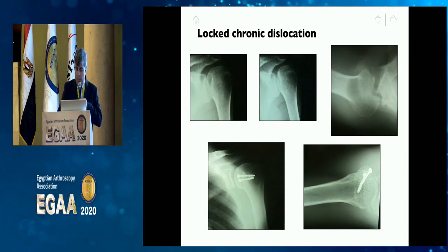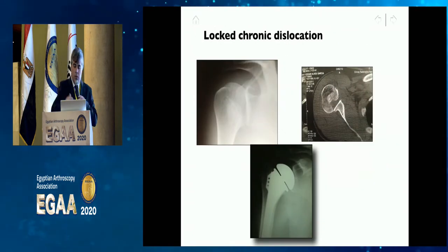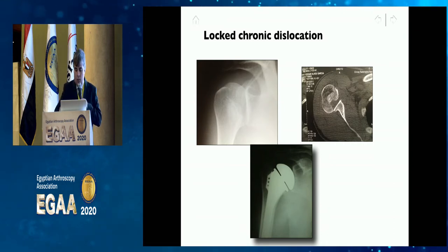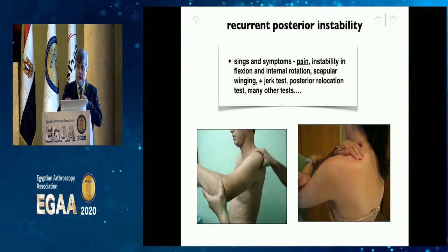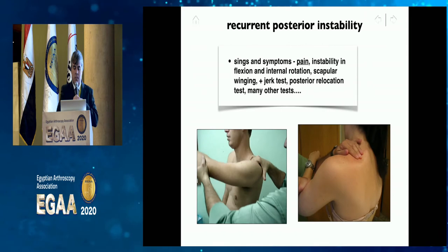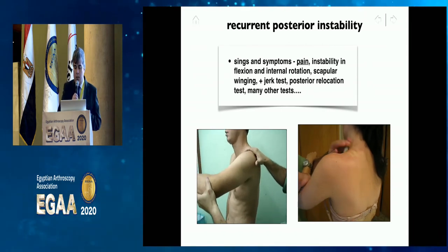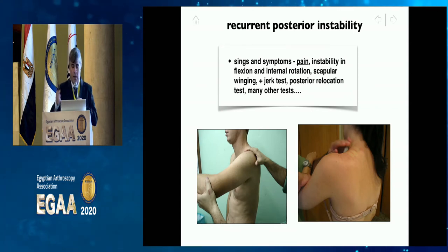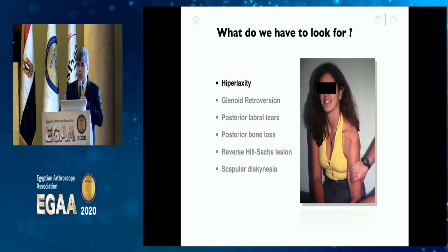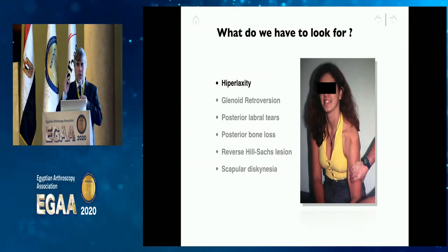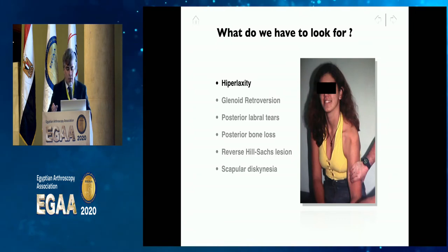The etiology differs: contact sports athletes tend to have more traumatic events — common in football, soccer, and skiing — while overhead athletes have an etiology related to posterior capsule attenuation, progressive labral tear, and repetitive trauma. Locked chronic dislocation is related mostly to trauma and treated by various procedures from reduction to the Neer-McLaughlin procedure or even replacement. Recurrent posterior instability is characterized by pain, instability in flexion and internal rotation, scapular winging, jerk tests, and posterior relocation tests.